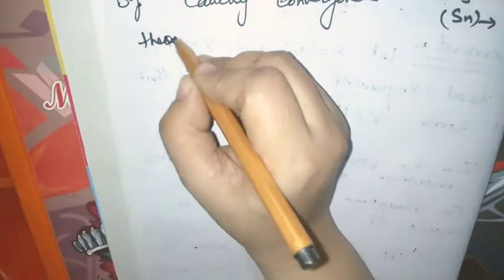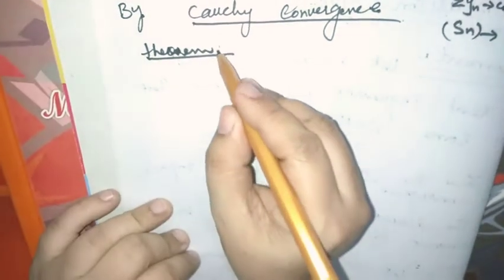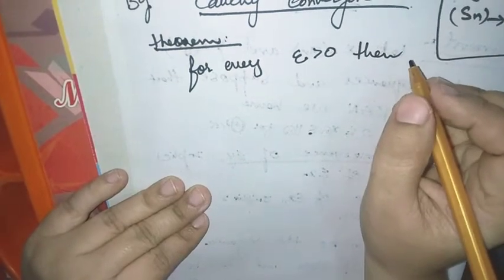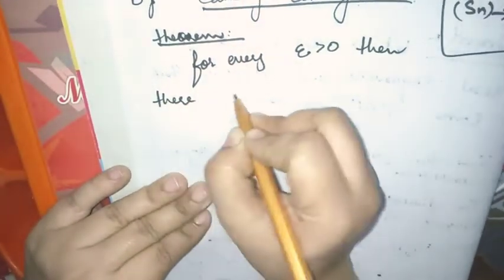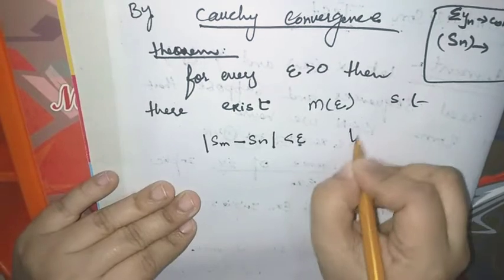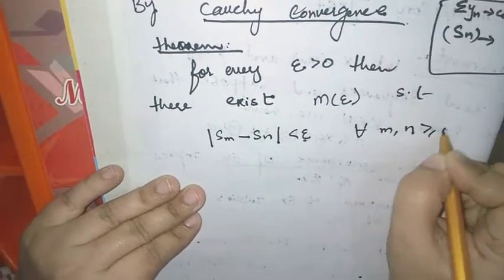by the Cauchy Convergence Theorem — इसका reference देंगे। Cauchy हमें क्या कहता है? By definition: for every ε > 0, there exists m(ε) such that |sm − sn| < ε for all m and n ≥ m(ε).